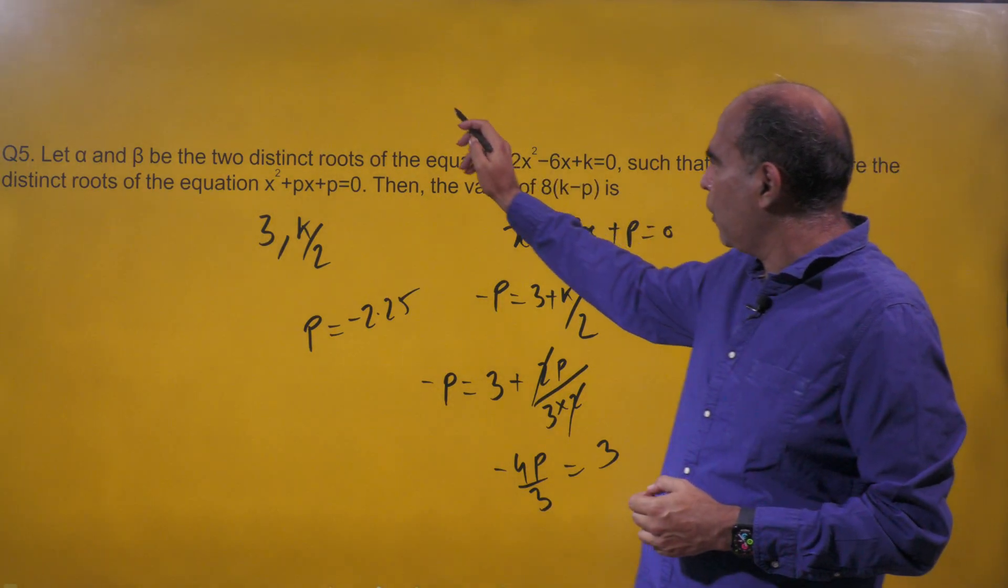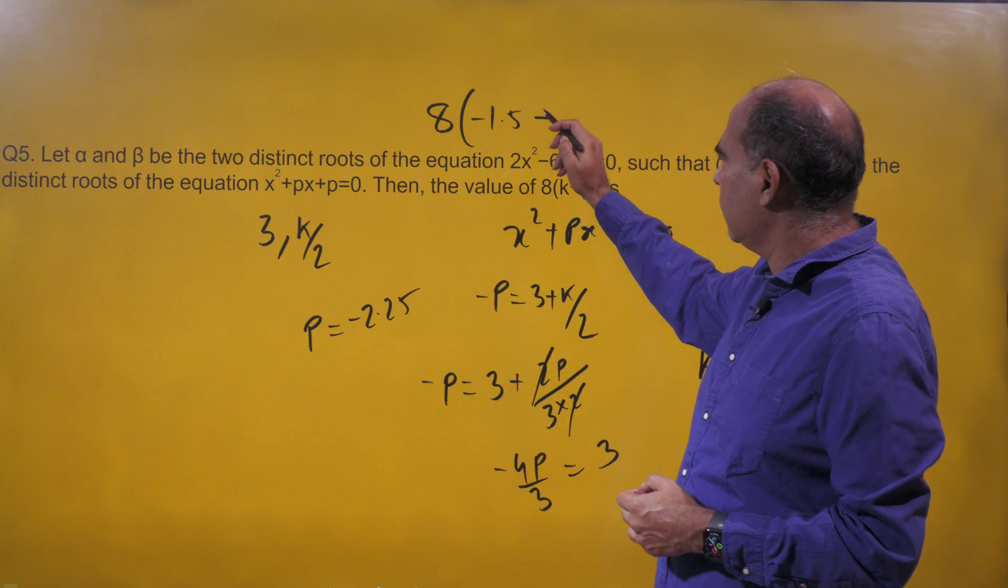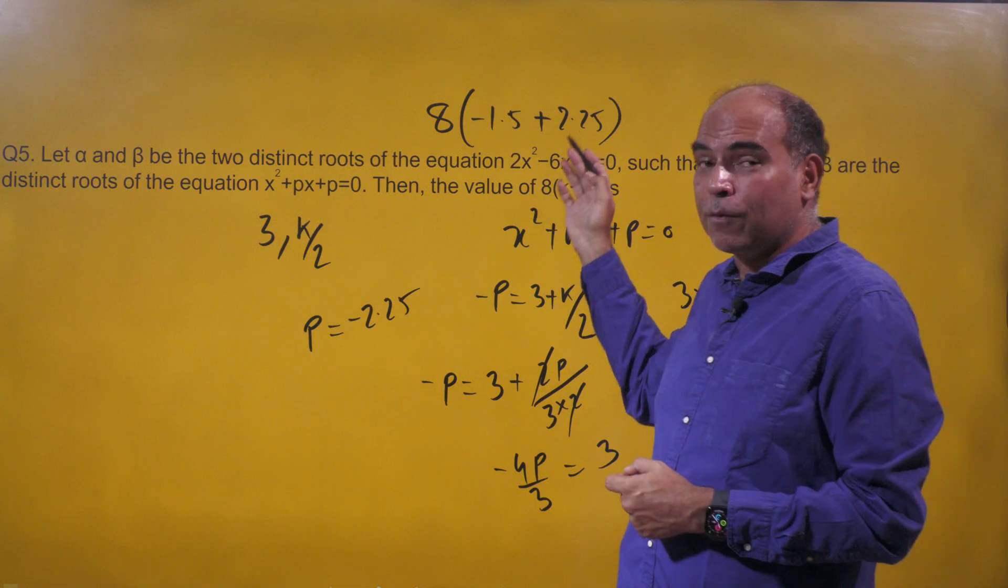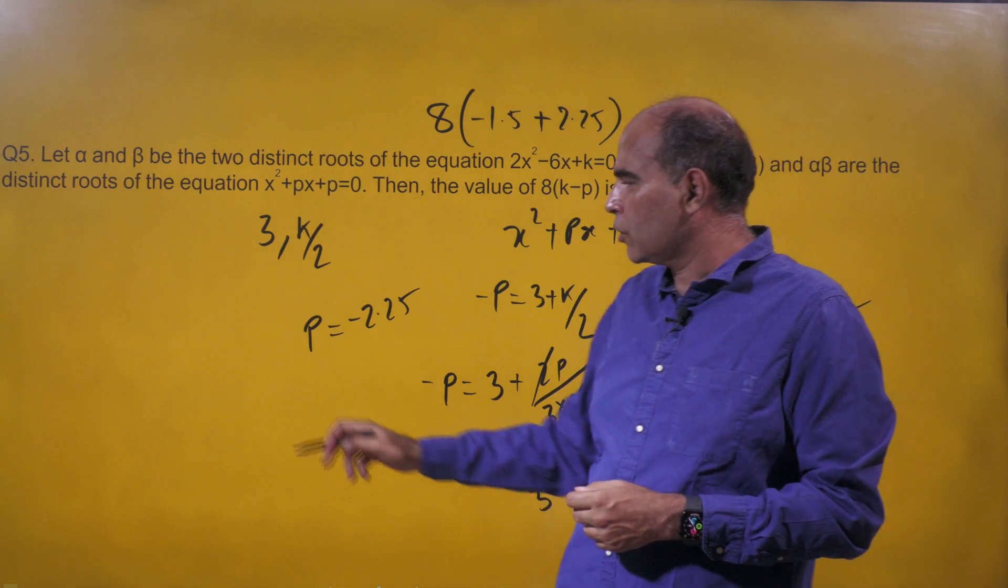So when I'm going for the target value of 8 times k minus p, which will become 8(-1.5) - (-2.25), I'm basically multiplying 8 × 0.75, which is 6. And that's the correct answer to this question.